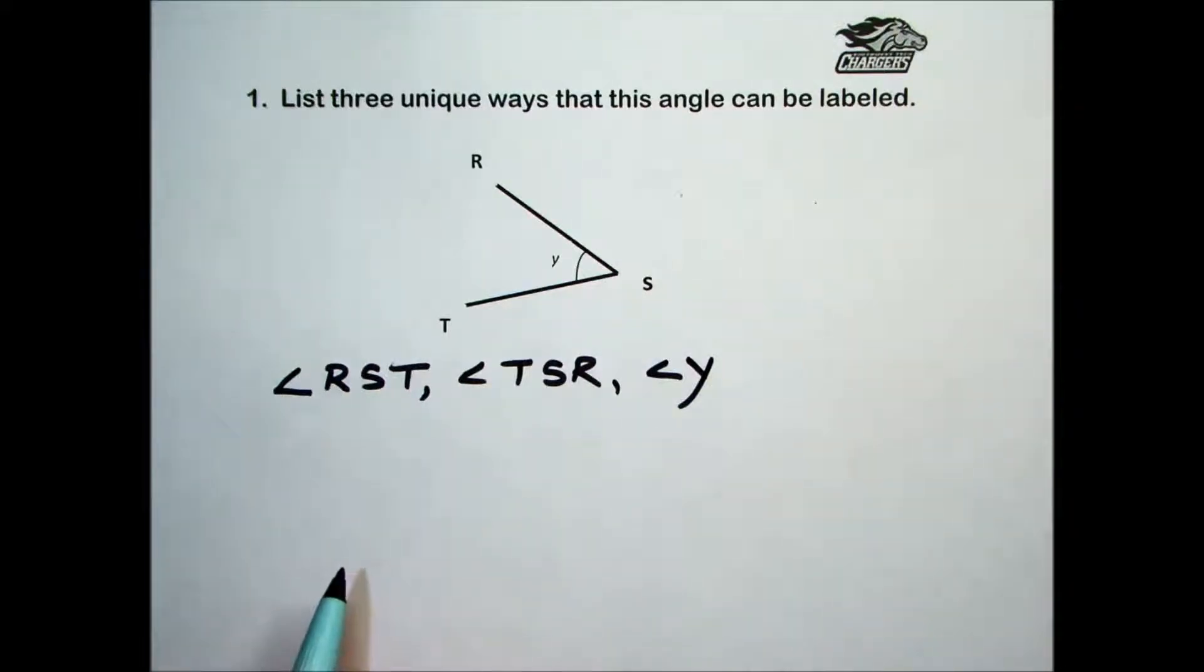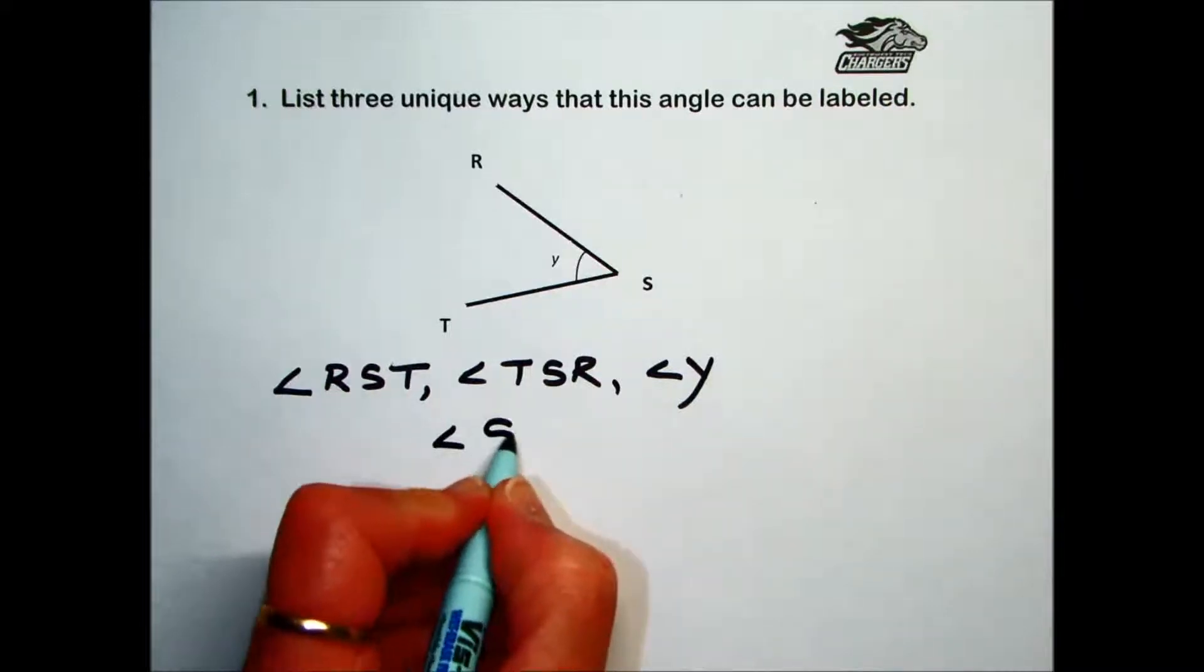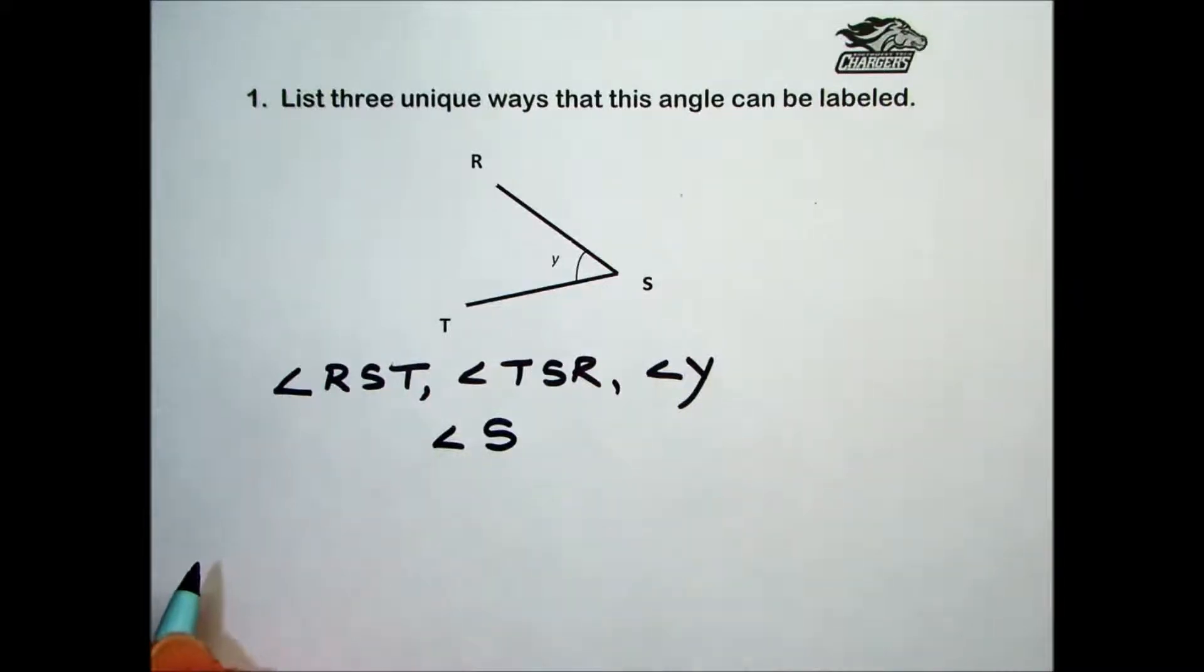We could use a single letter system. In that case, we would call this angle S, and this would be okay because there's no possibility that the angle can be mistaken for another angle.